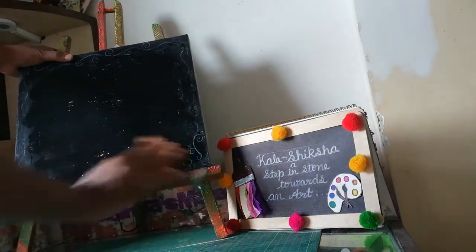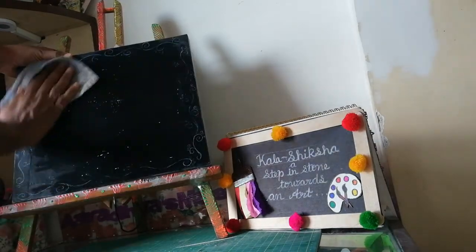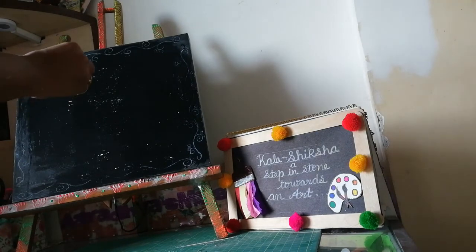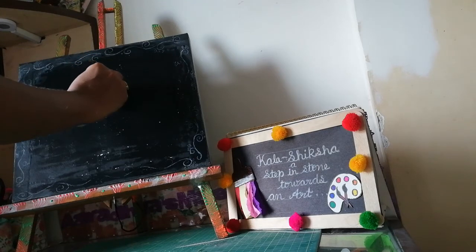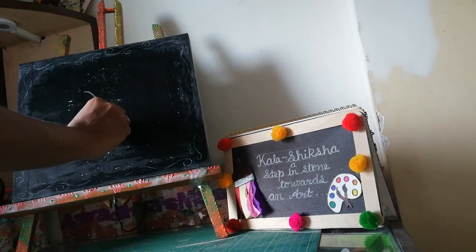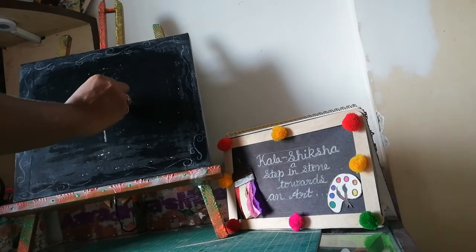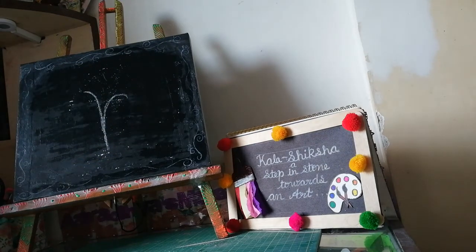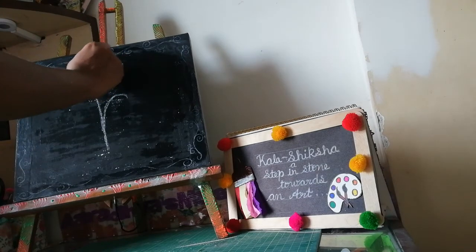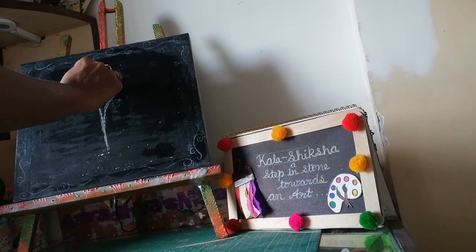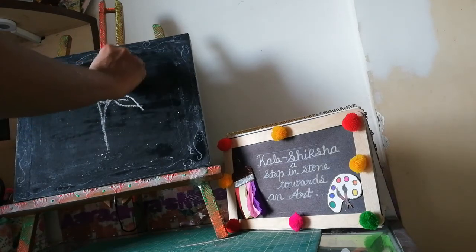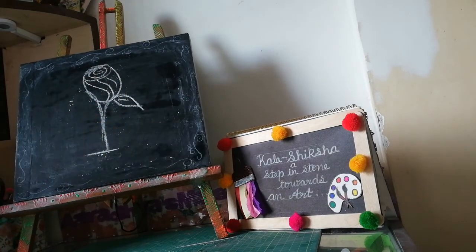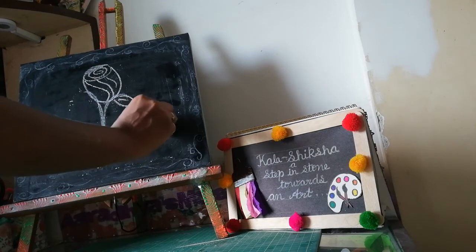We will move to the next drawing. Draw letter R. This is your R letter. Then, draw one oval shape, like this, and then draw one more oval shape. So, this is R for rose.